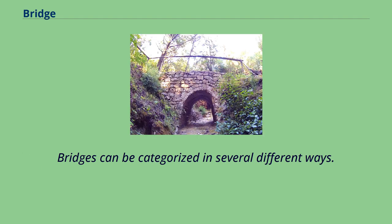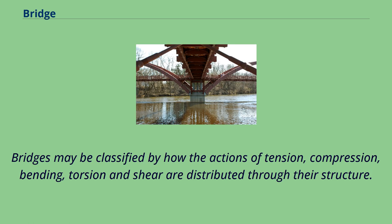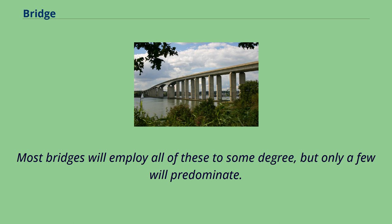Bridges can be categorized in several different ways. Common categories include the type of structural elements used, by what they carry, whether they are fixed or movable, and by the materials used. Bridges may be classified by how the actions of tension, compression, bending, torsion, and shear are distributed through their structure. Most bridges will employ all of these to some degree, but only a few will predominate. The separation of forces and moments may be quite clear.